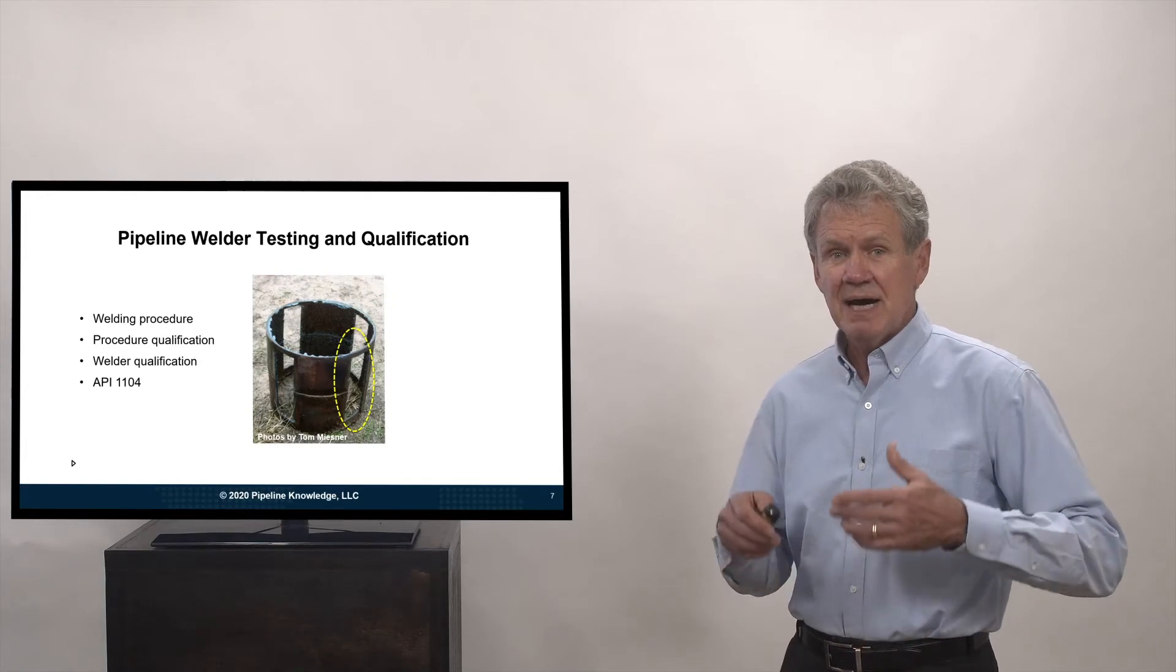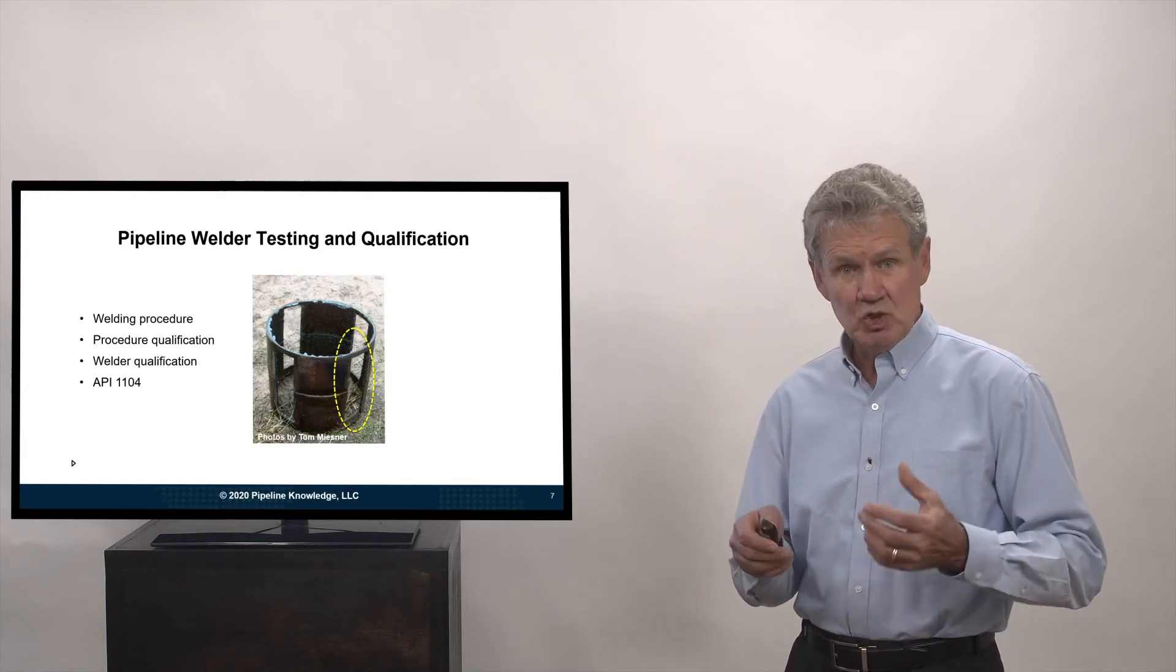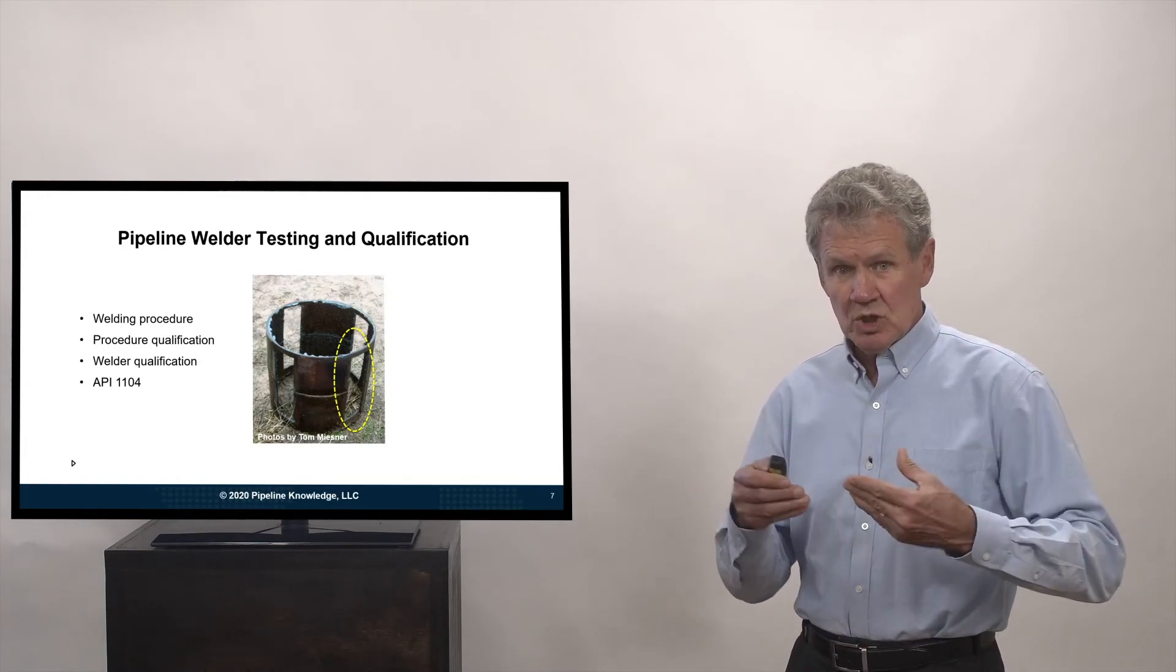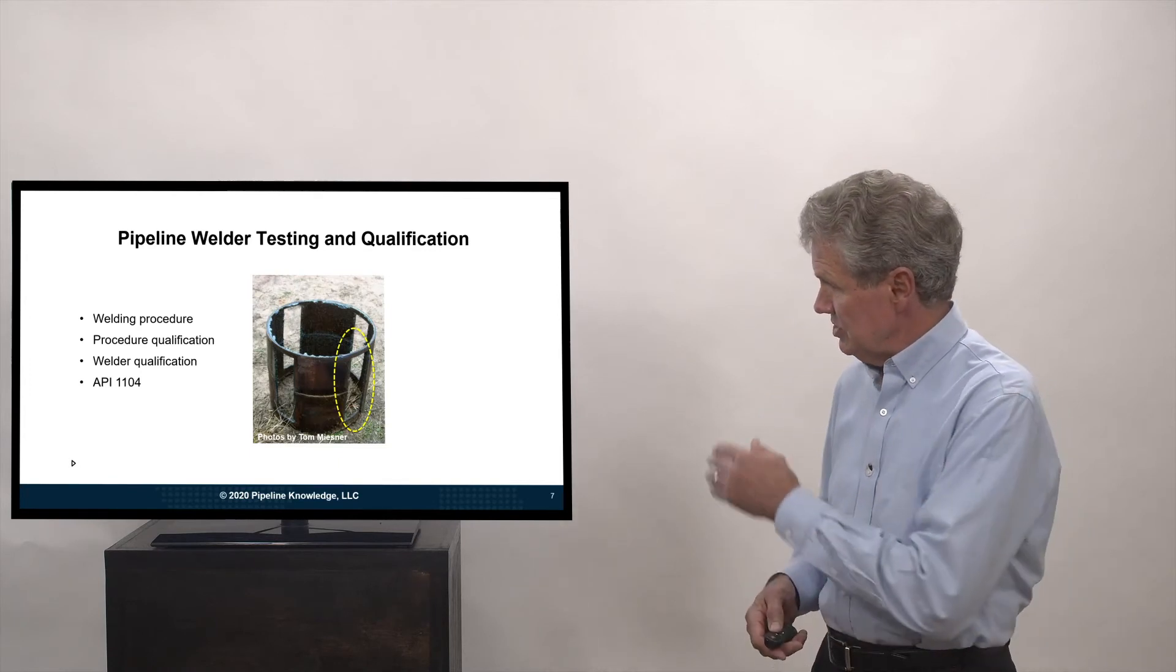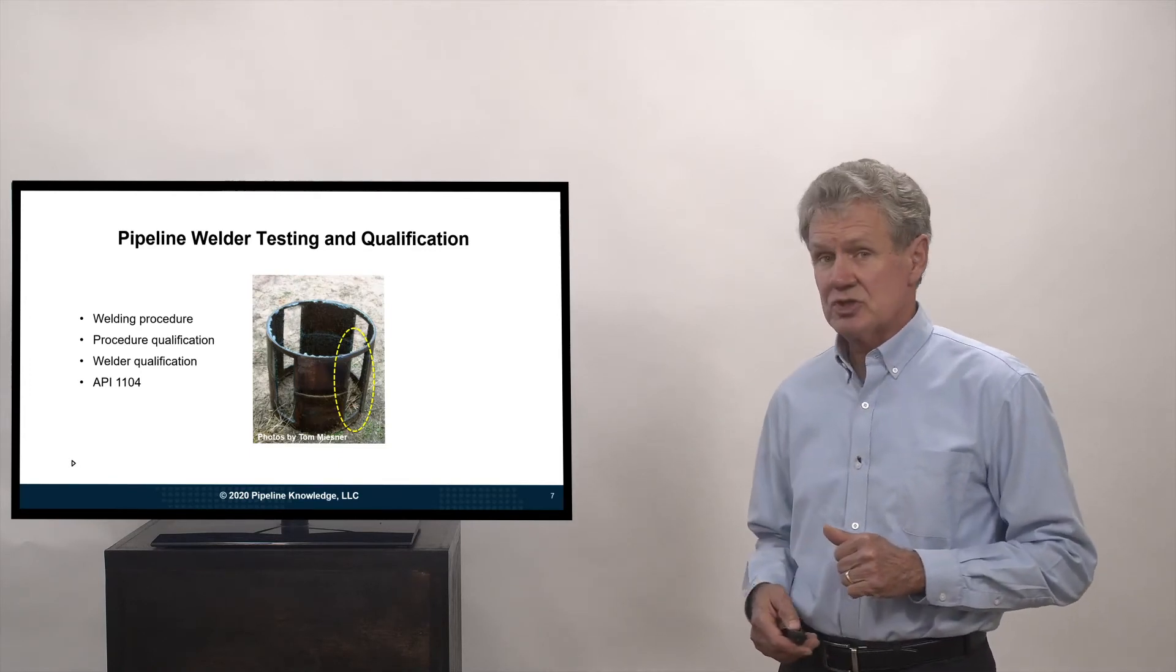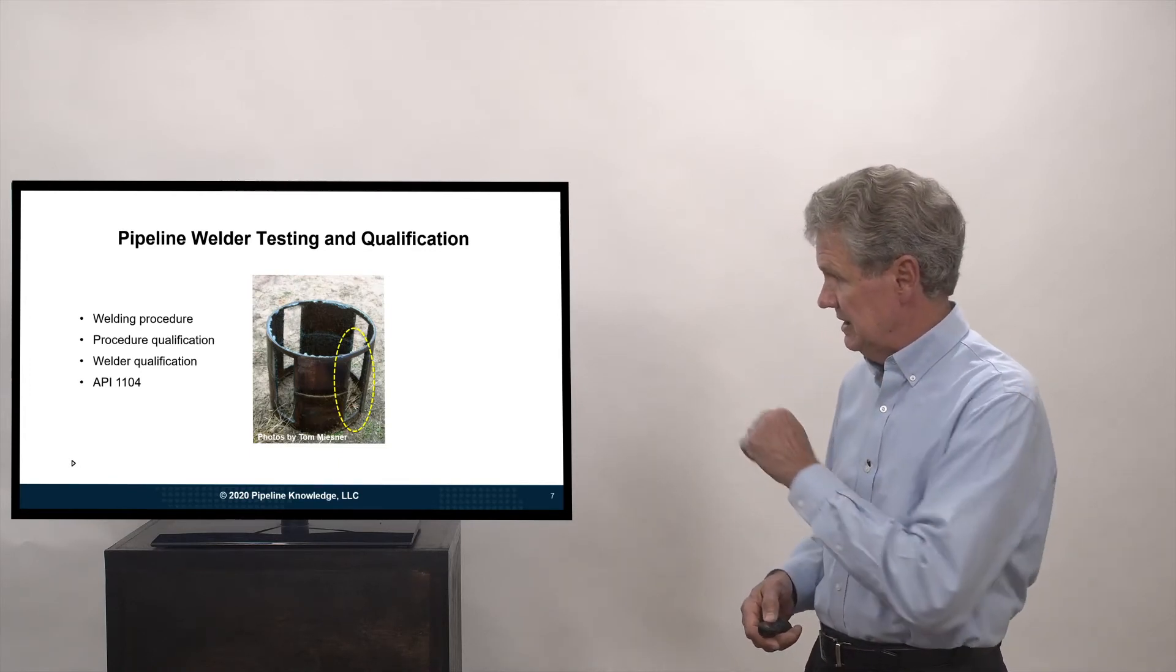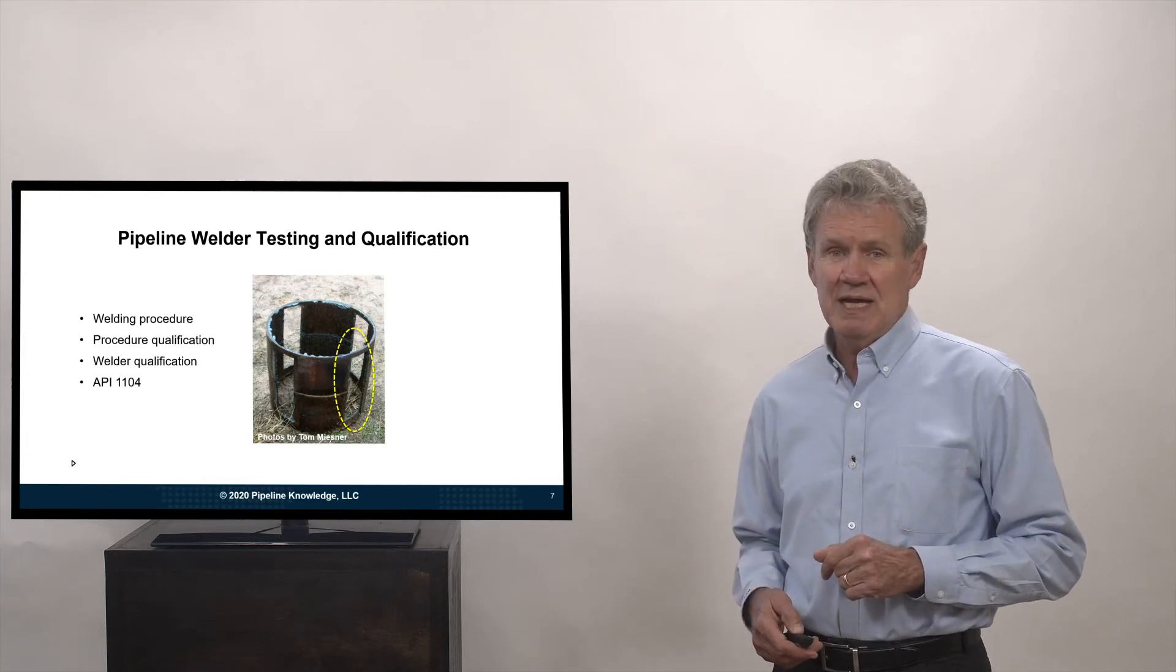So we do this test by having the welder take two pieces of pipe, line them up, and weld them together. And you can see about halfway down, there's a circumferential weld. And then the little oval is showing that right there.